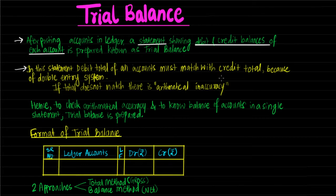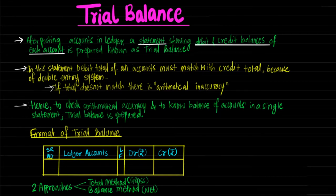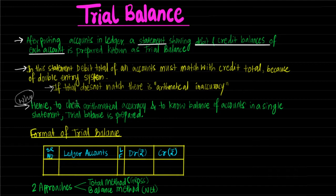We have already seen that in double entry system each debit has its own credit effect. So if we take all accounts and their balances, total debit balances should match total credit balances. If the totals do not match, there is an arithmetical inaccuracy. Hence, trial balance is prepared to check arithmetical accuracy, and also to know the balance of accounts in a single statement — these are the two reasons trial balance is prepared.